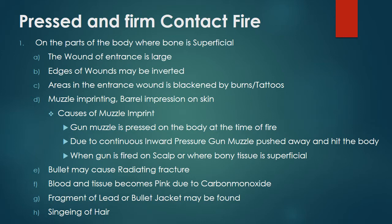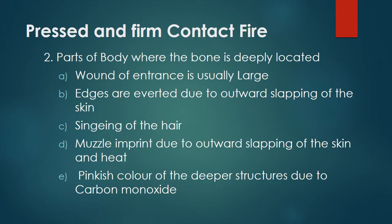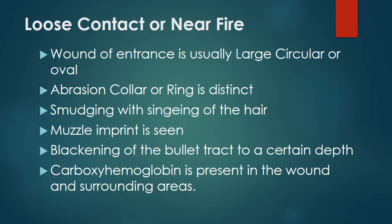When fired on the scalp or where bony tissue is superficial, the bullet may cause radiating fractures, blood and tissue becomes pink due to carbon monoxide reaction, and fragments of the bullet jacket may be found, along with singeing of hair. In pressed and firm contact fire on parts where bone is deeply located, the wound of entrance is usually large with edges averted due to outward slapping of the skin, with singeing of hair, muzzle imprint, and pinkish color of deeper structures due to carbon monoxide.